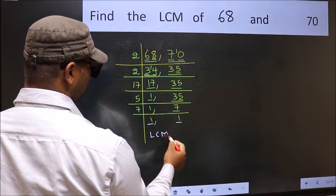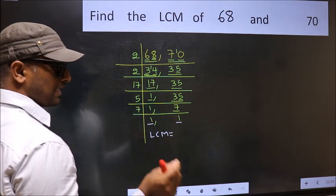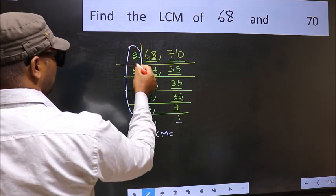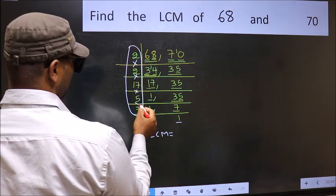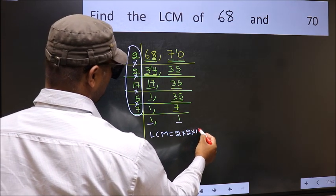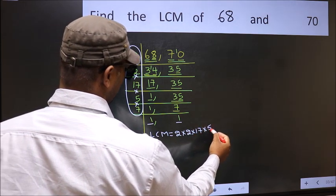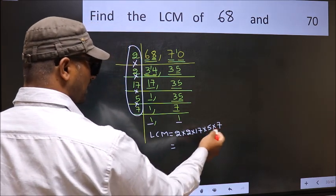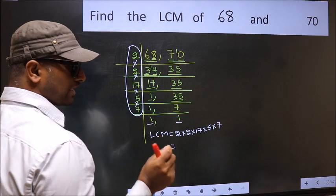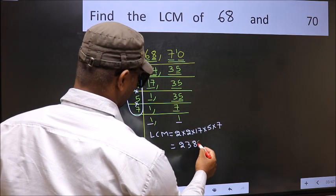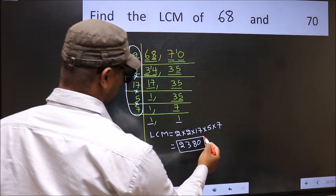So our LCM is the product of these numbers. That is 2 times 2 times 17 times 5 times 7. When we multiply these numbers, we get 2380 is our LCM.